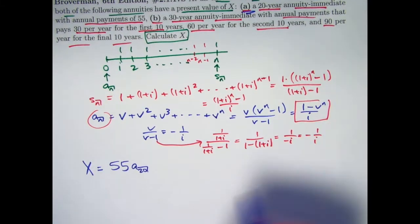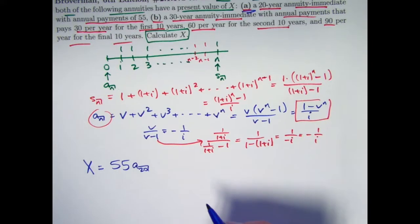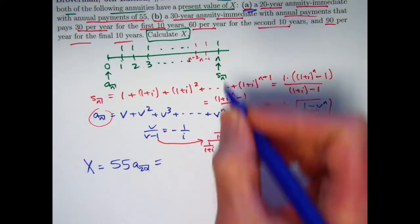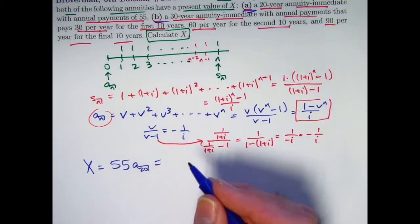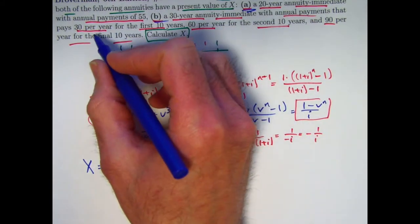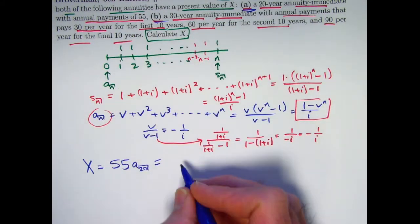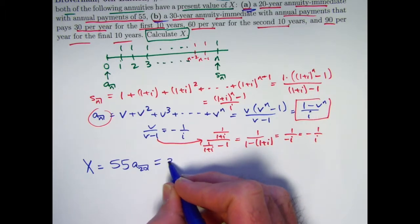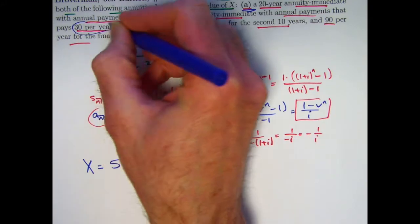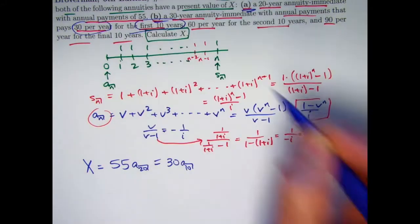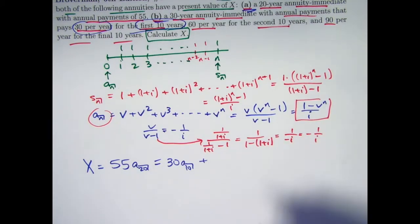OK. Let's not bother writing that in terms of v and i. Let's just leave it as is at the moment. That's got to equal the present value of the other annuity. That's made up of three pieces. The present value of the first 10 payments over the first 10 years is going to be 30A_10. Right. Because you have 30 per year for the first 10 years.